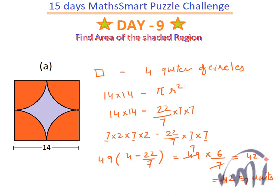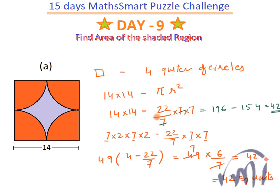That's one way of solving the problem. Alternatively, if you know that 14 squared is 196, you can write it directly; the 7 cancels and 22 × 7 = 154, giving 196 − 154 = 42 square units. It's completely up to you which approach you use.